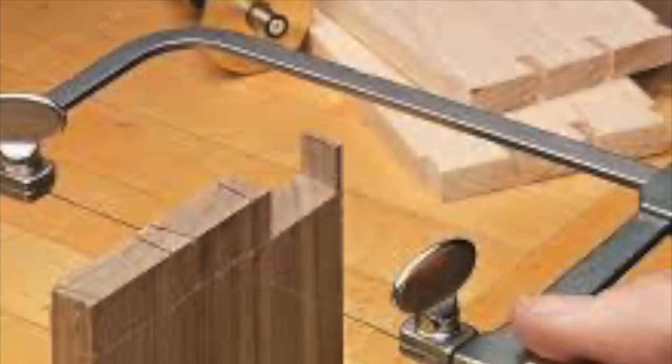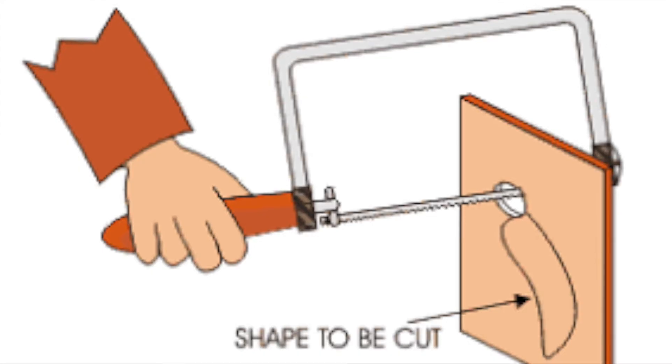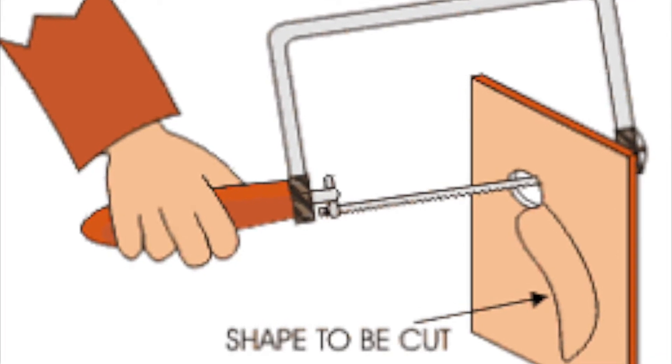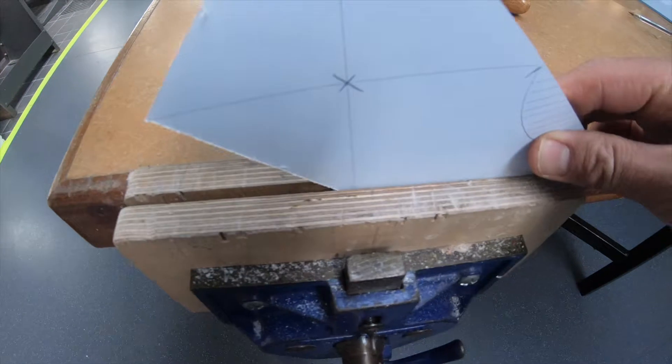Next up, the coping saw. This is how you use it. It's ideal for cutting curves, acrylic, and internal cuts on all types of material - wood and plastic. Can't be used on metal. So pop it in your vise.